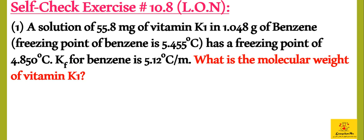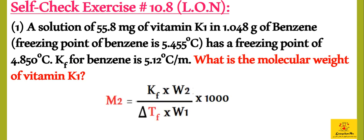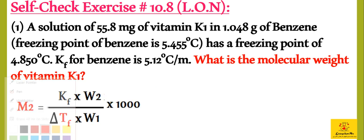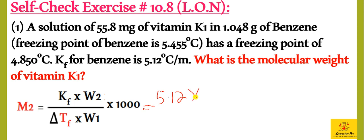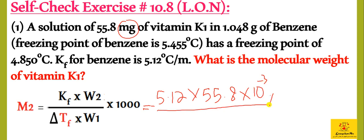The molecular weight formula is simple; we have already seen it. We will put values: KF is 5.12, W2 is the weight of solute, which is vitamin K1 — 55.8 times 10 to the minus 3 grams (converted to grams), multiplied by 1000, divided by Del Tf.